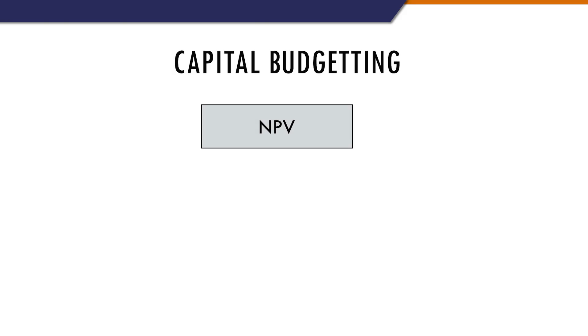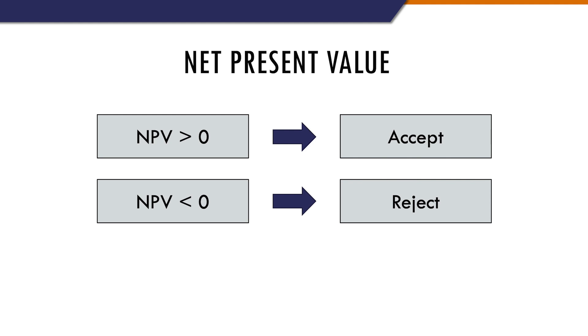Looking at the NPV first — the net present value tells us how valuable a project is going to be. The general rule is that if the NPV of a project is greater than zero, then it should be accepted. That said, if the company has multiple projects with a positive NPV but doesn't have the funds to invest in all of them, it should only prioritize the ones with the highest NPV.